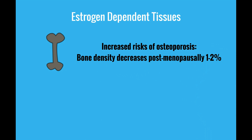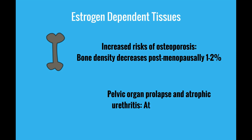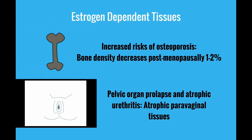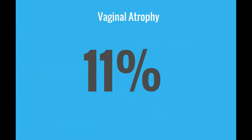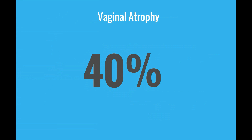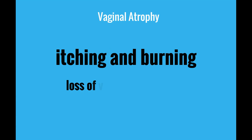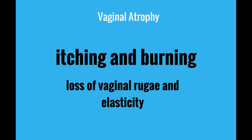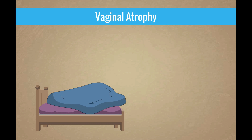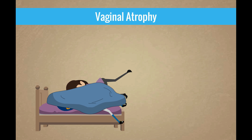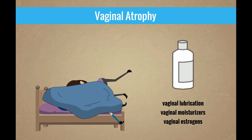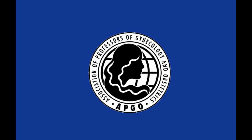The vaginal epithelium and uroepithelium are also estrogen-dependent tissues. Pelvic organ prolapse and atrophic urethritis can result when the perivaginal tissues that support the bladder and rectum become atrophic. Up to 40 percent of menopausal women will experience one or more symptoms of vaginal atrophy, which may present with itching and burning. The loss of vaginal rugae and elasticity can cause narrowing and shortening of the vagina. Vaginal atrophy and vaginal dryness can also cause significant dyspareunia. Vaginal lubricants, vaginal moisturizers, and vaginal estrogens can all provide symptom relief.